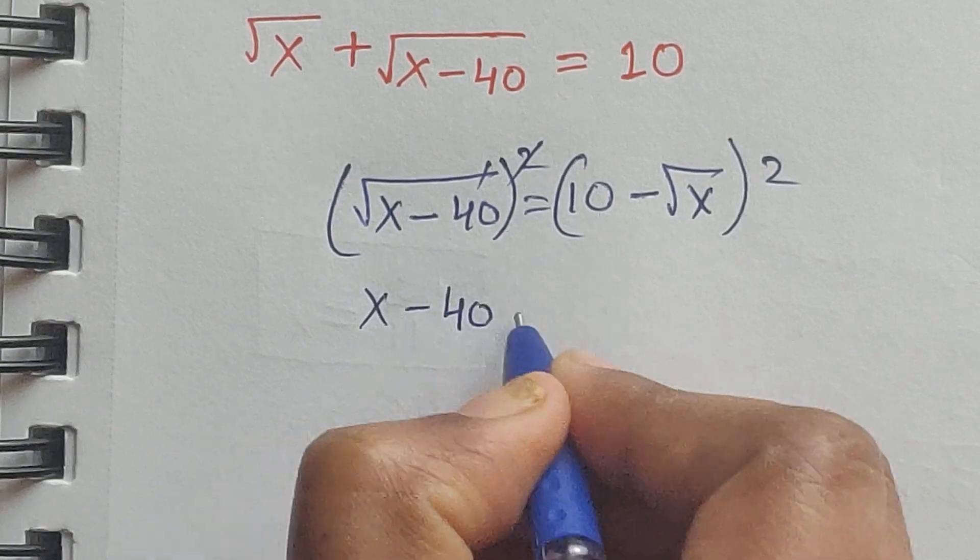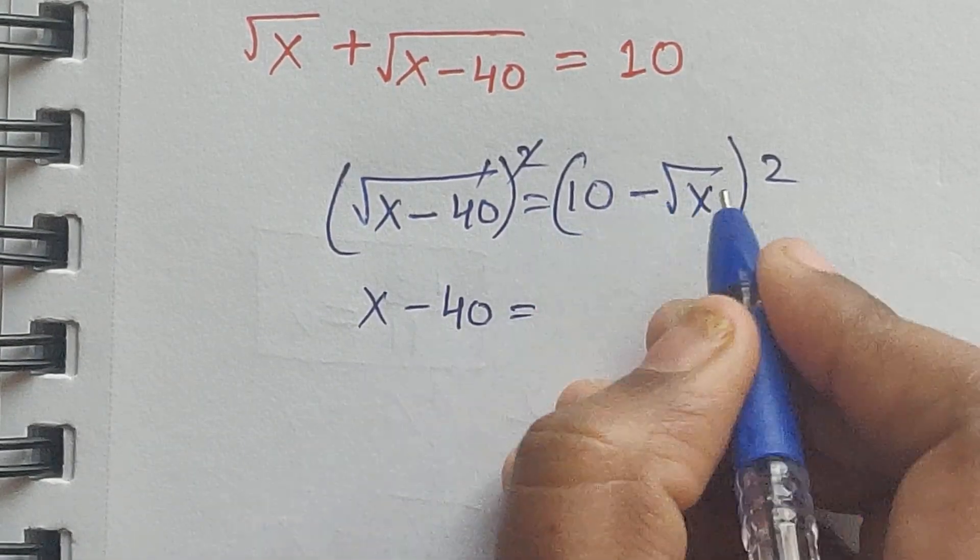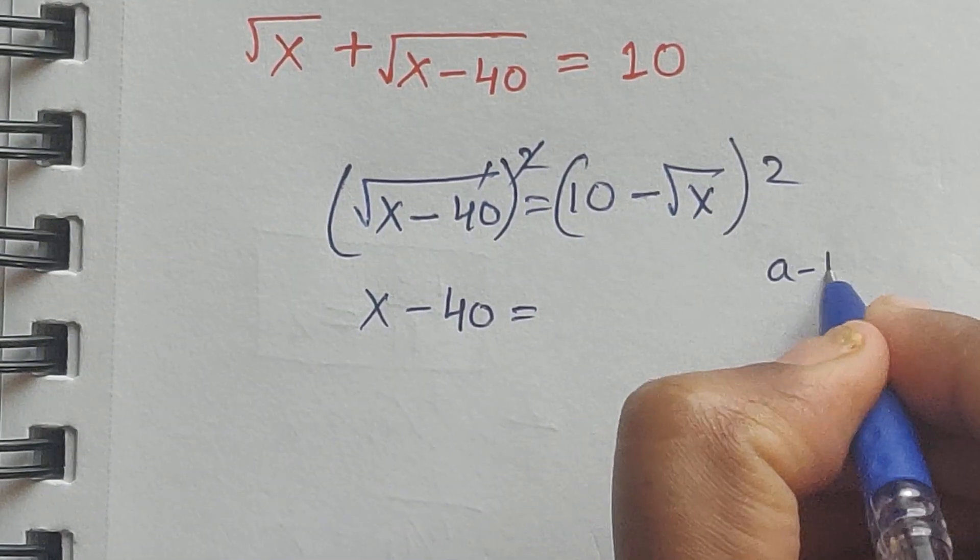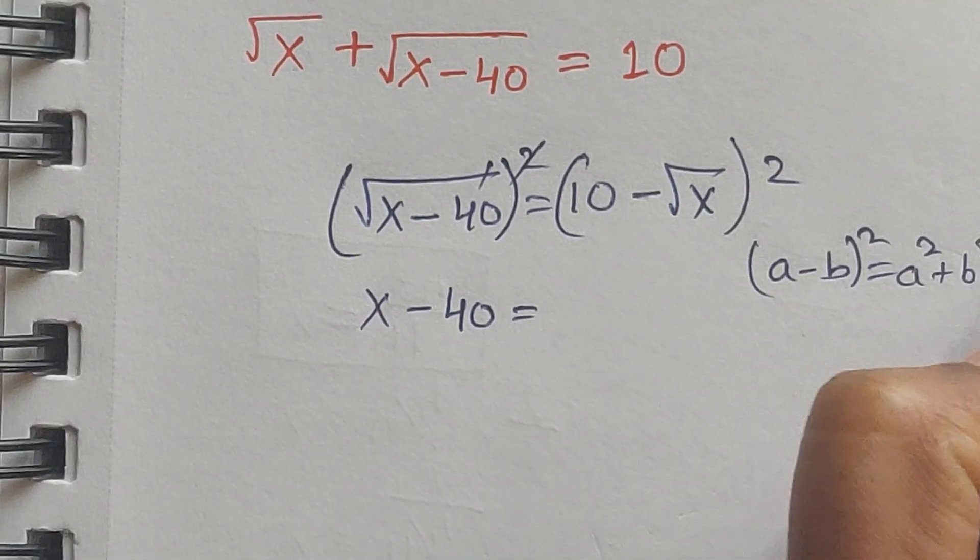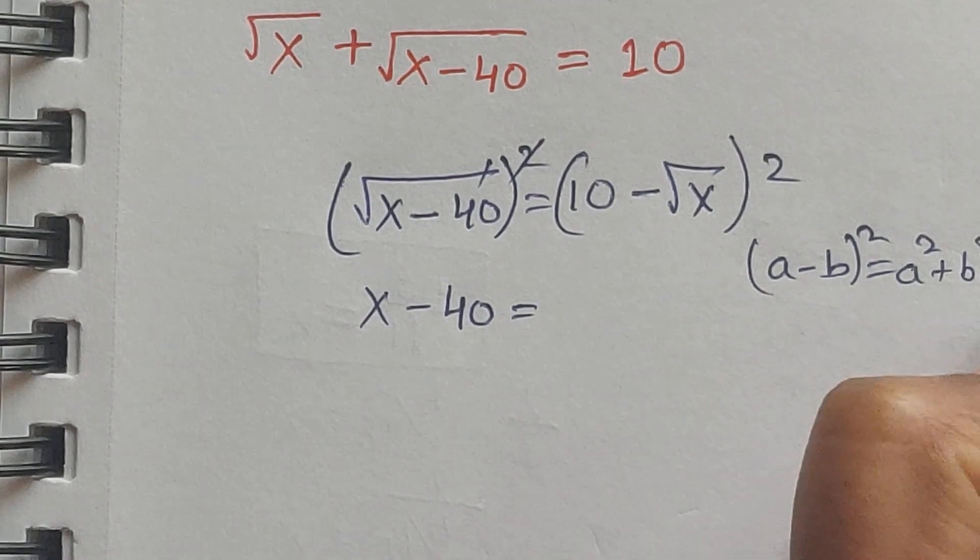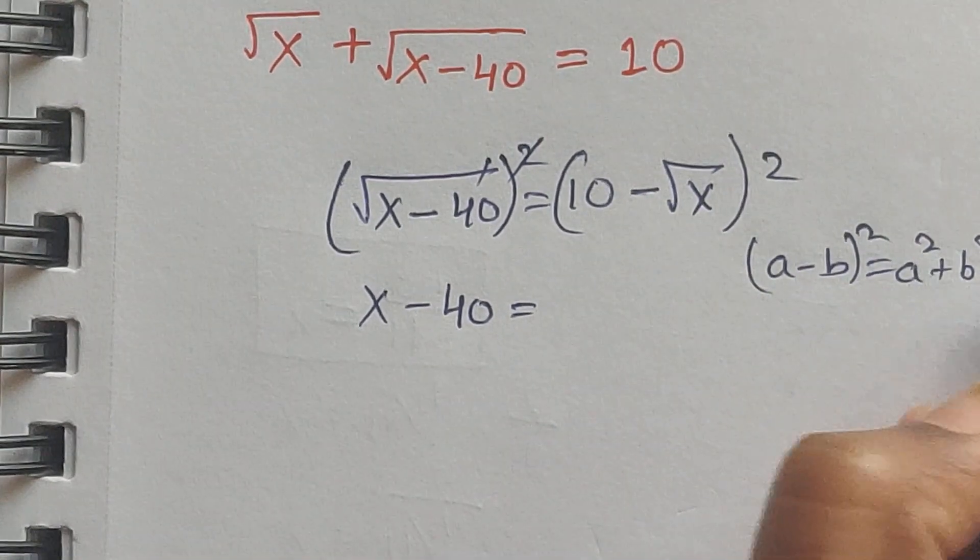x minus 40 equal to... So this is a minus b whole square equal to a square plus b square minus 2ab formula. So use this formula.